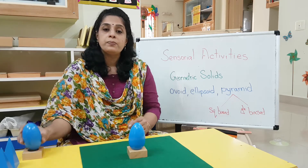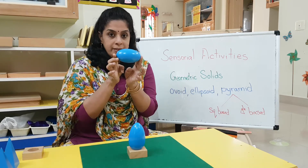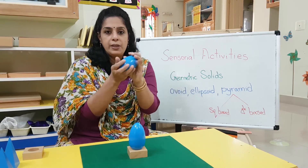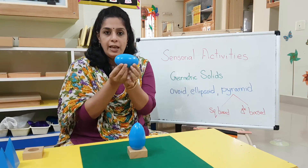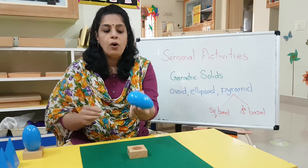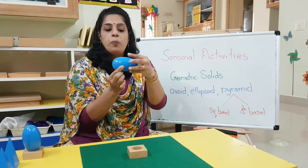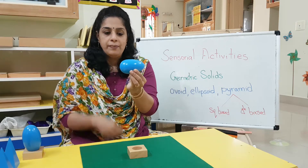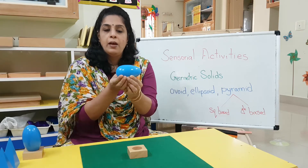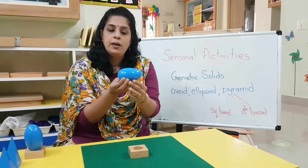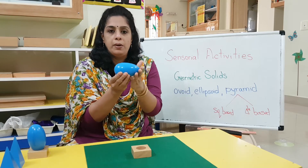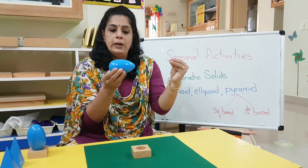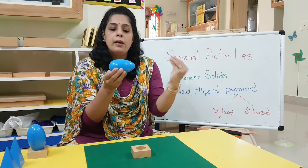So to remember: ellipsoid — both sides are the same on either side. Ellipsoid and ovoid — where it is pointed on one edge and flatter on the other. Both sides are curved, but the ovoid is a little more tapered on one side. Ovoid.